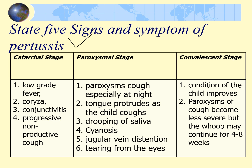In the catarrhal stage the child typically has mild symptoms including a low-grade fever, runny nose, conjunctivitis, and a progressively worsening non-productive cough. The paroxysmal stage lasts two to four weeks and is marked by unmistakable symptoms. The child experiences severe bouts of coughing, especially at night, with each episode ending in a distinctive whoop sound caused by spasms of the glottis.